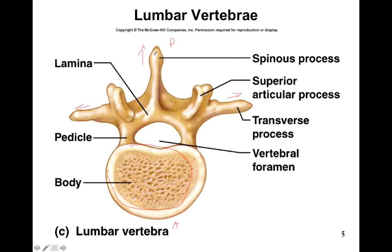The spinous processes are those little bumps that you feel when you run your finger down someone's spine. The pedicle is the part that connects the body to the transverse process. The lamina connects the transverse process to the spinous process. The vertebral foramen is the foramen that the spinal cord passes through — this is how the spinal cord is protected.